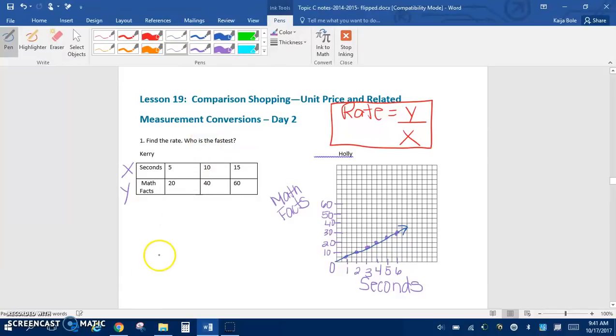So if we're looking at the table here, we're trying to find the rate for Carrie, so we are going to do math over seconds. For here I'm going to do the standard algorithm. So it says that Carrie can do 20 math facts in 5 seconds. So we want to know how many she can do in 1 second.